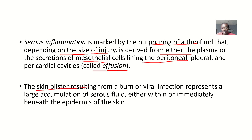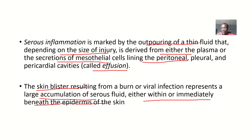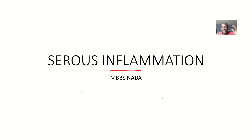Skin blisters resulting from burns or viral infections represent a large accumulation of serous fluid, either within or immediately beneath the epidermis of the skin. This blister represents an accumulation of fluid inside — a large accumulation of serous fluid within or just beneath the epidermis. This is what is known as the serous type of inflammation.